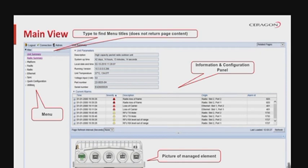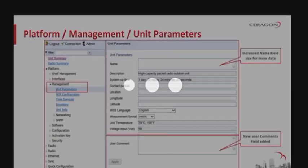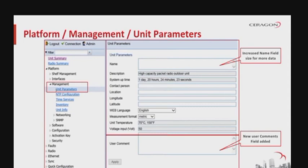To the left side, you can see the menu tree with a search button at the upper part to look for specific text strings inside the menu titles. To the lower right side, you can see a picture of the managed element. The rest is the main selection view, where you can find the most severe alarms and the current alarms tab. The main unit parameters are visible under the Platform > Management tab, including the unit name, description, system uptime, unit temperature, current voltage input, and a list of additional editable fields.